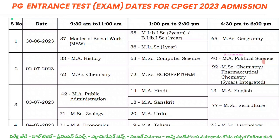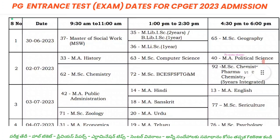In CPGET, three different papers will be conducted in a day. For example, on a given date we have Master of Social Work, Library Science, and MSc Geography. In this case, you may need to apply for two papers.